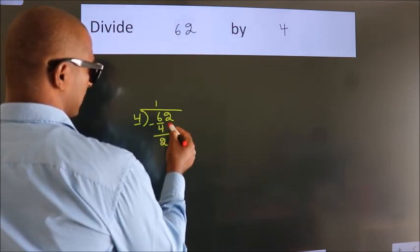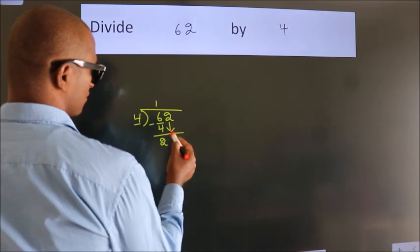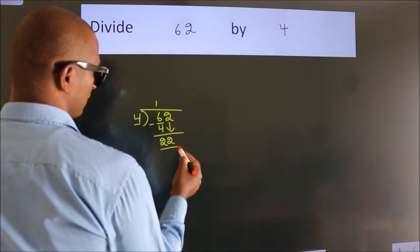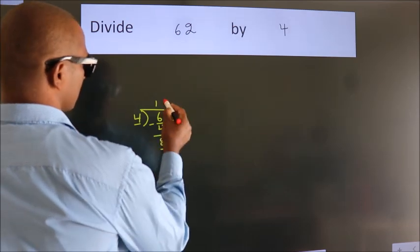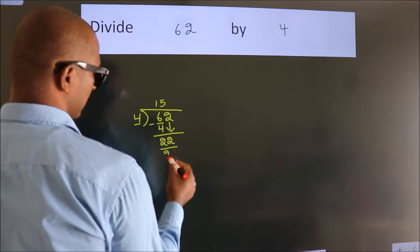After this, bring down the beside number. So, 2 down. So, 22. A number close to 22 in 4 table is 4 fives 20.